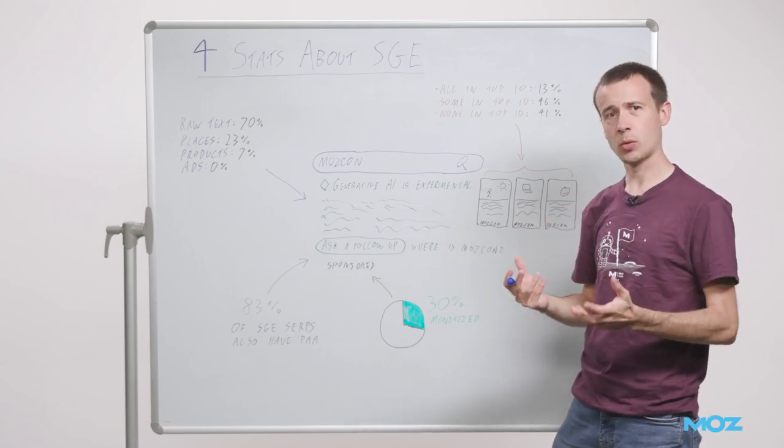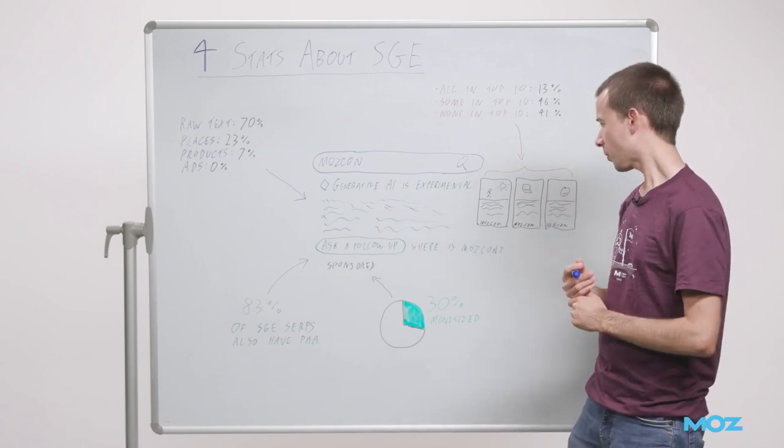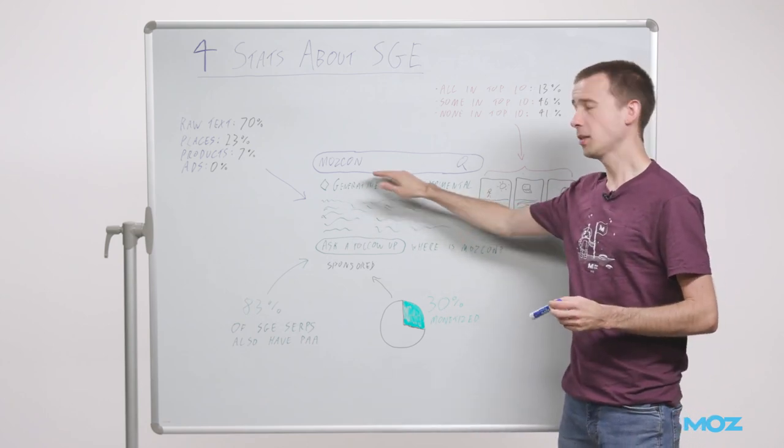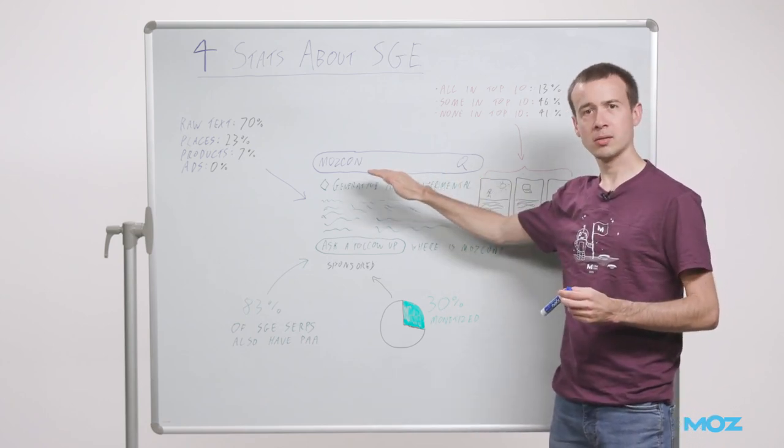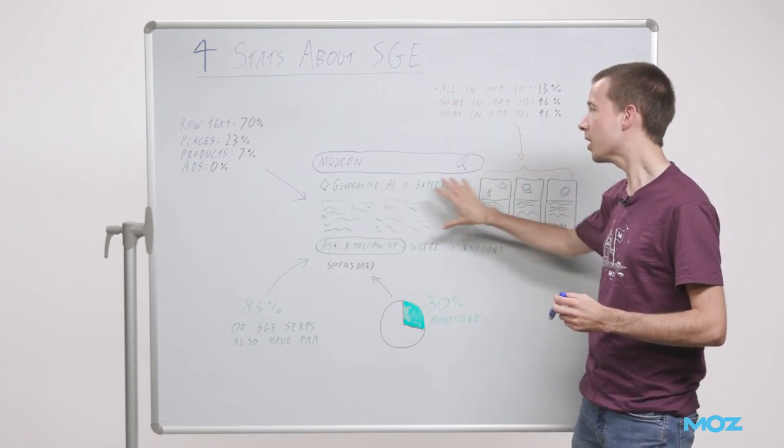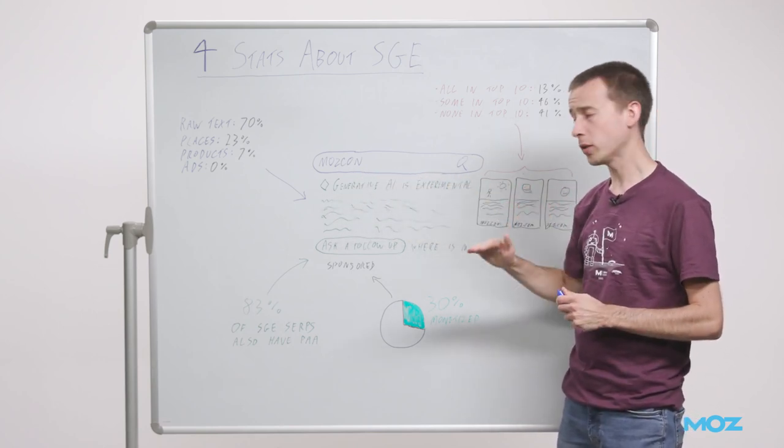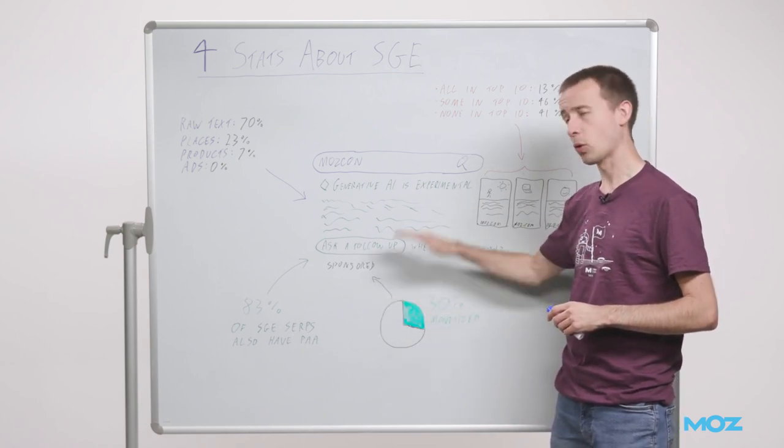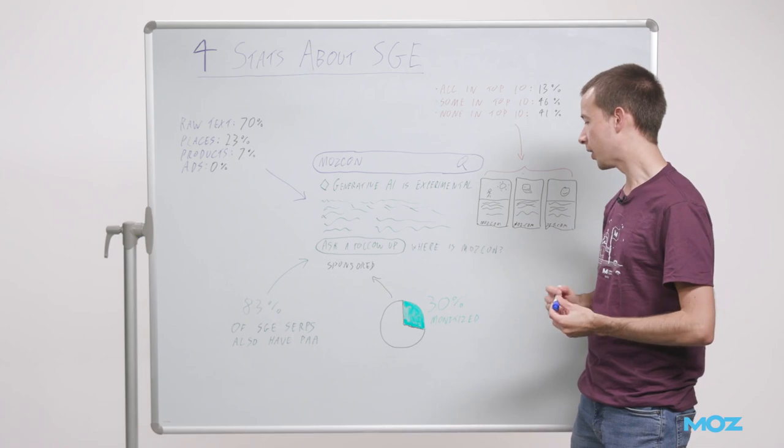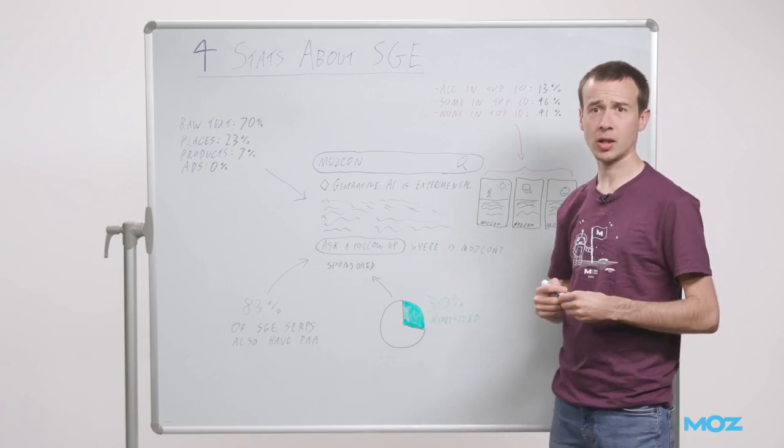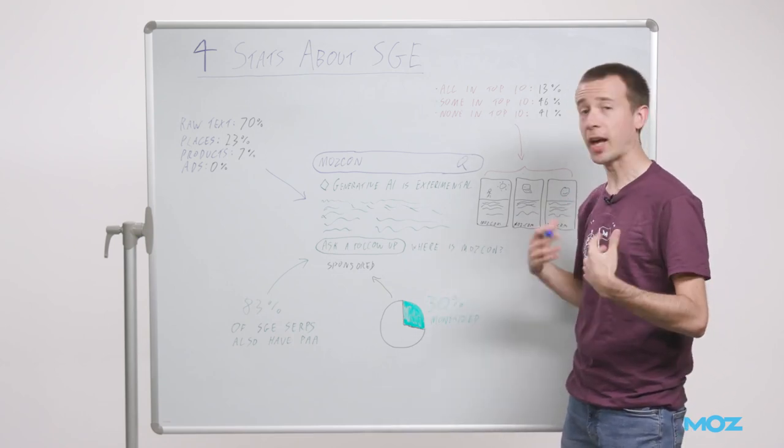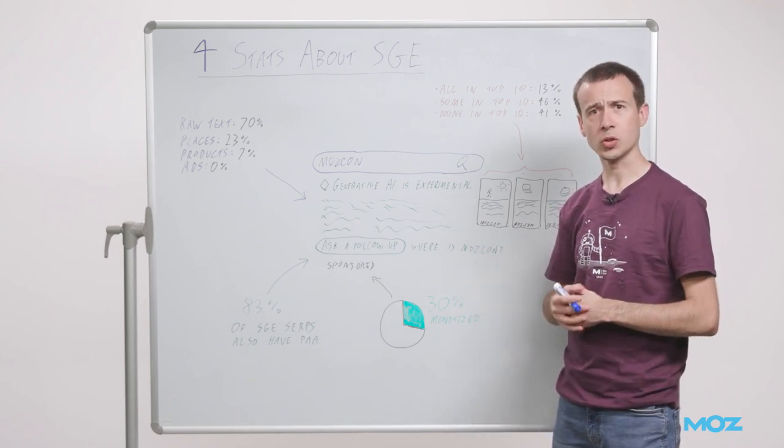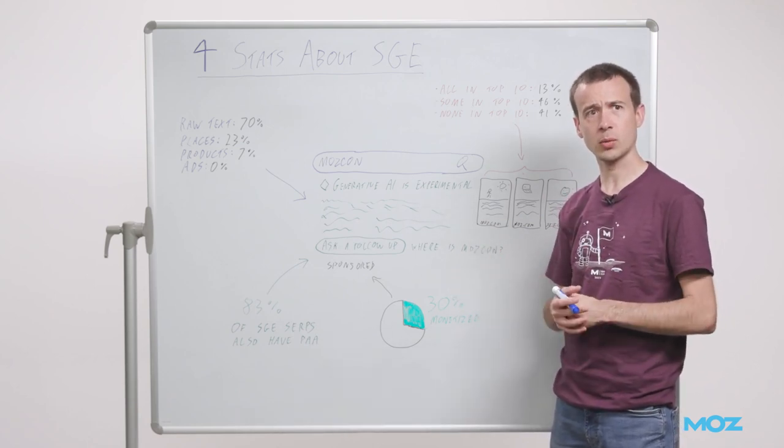The second stat I want to share is about ads. You'll notice I haven't put any ads above the SGE here, and that's not an accident - I didn't see that even once. Ads, when they exist, are beneath the SGE, pushed right down. In only 30% of the SERPs I looked at were there any ads at all, which I'd say is quite low when you're looking at competitive head terms, which MozCast keywords are.